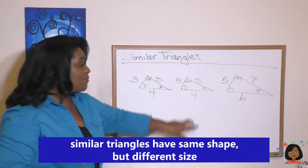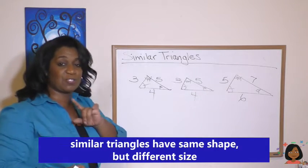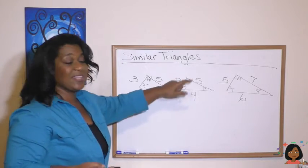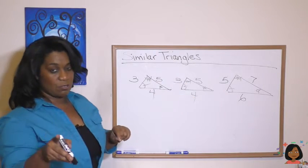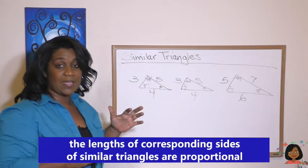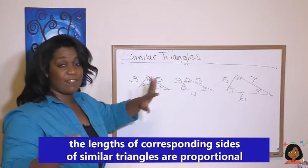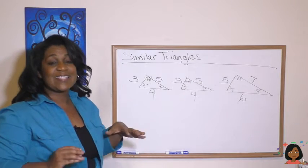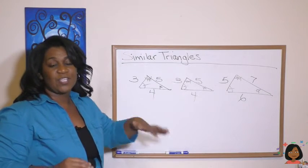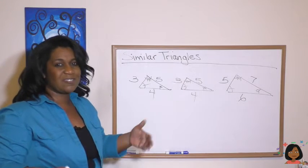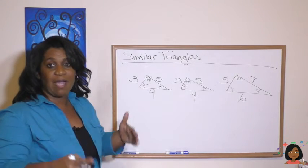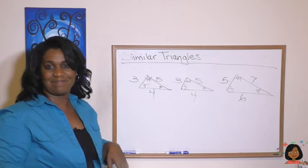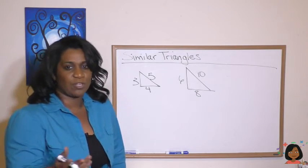So today we're talking about this phenomenon between similar triangles and what we're going to be talking about is the lengths of the sides. Turns out that similar triangles have lengths of their sides that are proportional. And what's cool about that is that if you have a missing side, you can use proportions or ratios to figure out your missing side.